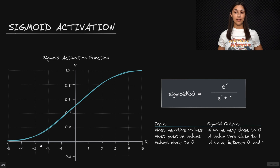And so therefore, since the output of sigmoid lies between zero and one, then using the intuition that we just talked about, we can think about sigmoid as giving us a probability of activation for a given node.